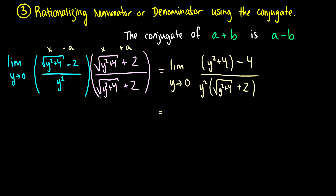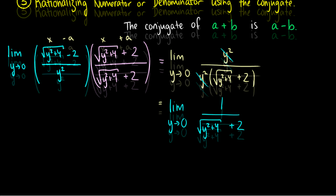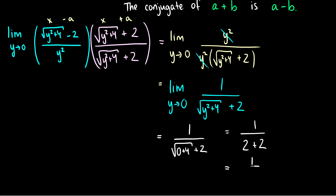We can simplify a little bit. On the top, the plus 4 and minus 4 cancel out, leaving just y squared. Now we can cancel out these y squareds, and we're left with the limit as y goes to 0 of 1 over the square root of y squared plus 4 plus 2. Now we can plug in y equals 0 — we're not going to get 0 in the denominator anymore. So it's 1 over the square root of 0 plus 4 plus 2, which is 1 over the square root of 4 plus 2. The square root of 4 is 2, so this is 1 over 2 plus 2, which is just 1 over 4.